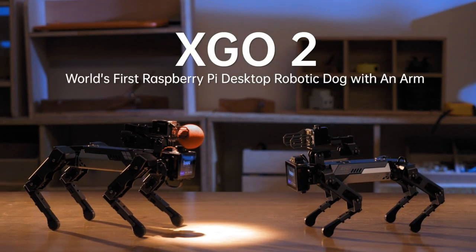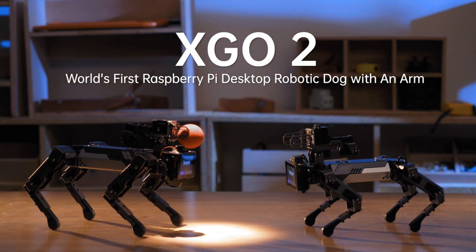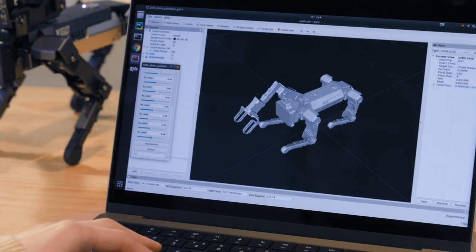It's the world's first desktop-level robotic dog with an arm. Everyone can create their own functions of XGO 2 for various uses.